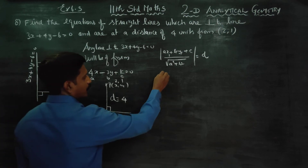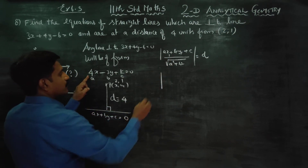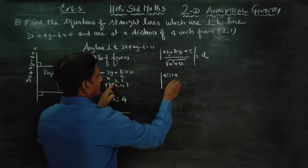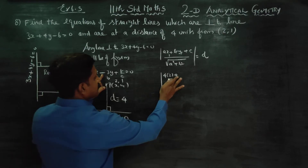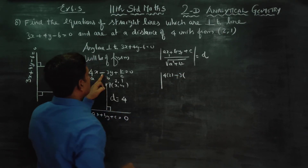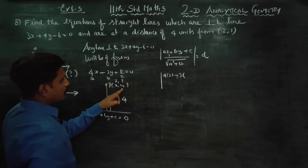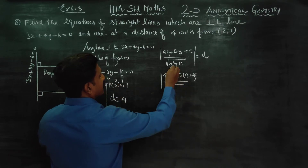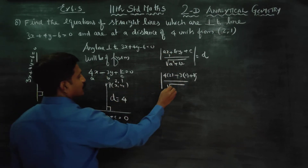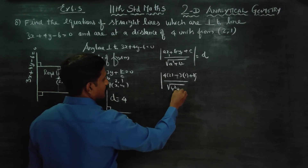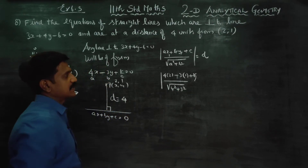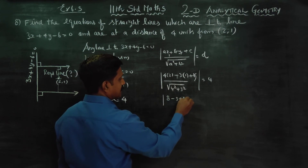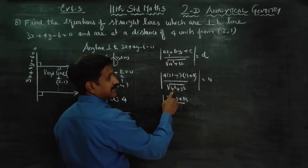Substituting the values: a = 4, x₁ = 2, b = -3, y₁ = 1, c = k. So we get |4(2) + (-3)(1) + k| / √(4² + (-3)²) = 4. Simplifying: |8 - 3 + k| / √(16 + 9) = 4, which gives |5 + k| / √25 = 4, and √25 = 5, so |5 + k| / 5 = 4.